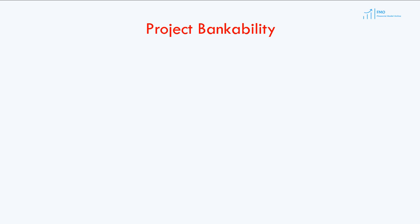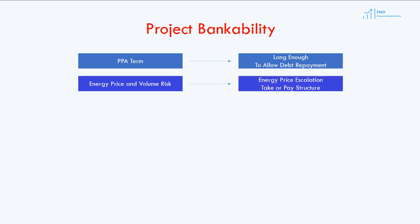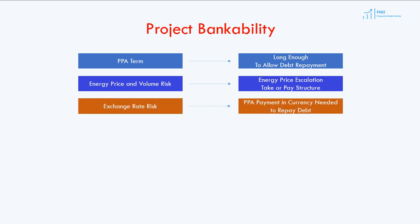The key PPA terms that make it bankable include the PPA tenor, which has to be long enough to allow repaying debt and recovering equity investment. Next, energy price and volume risk has to be taken by the off-taker, so the project generates a secure revenue stream. The exchange rate risk also has to be borne by the off-taker, so the revenue generated by the project can be used to repay debt and recover equity investments.